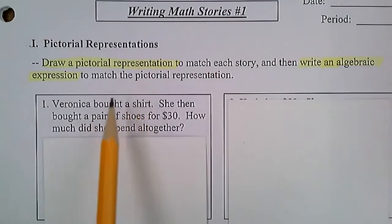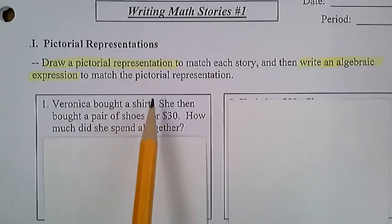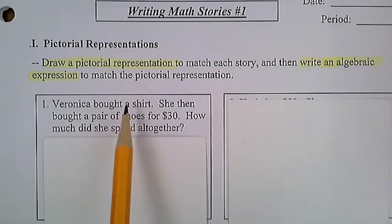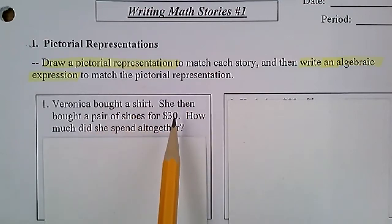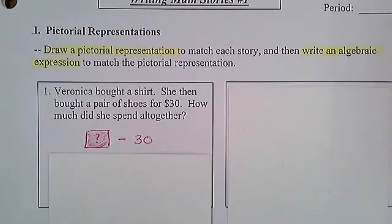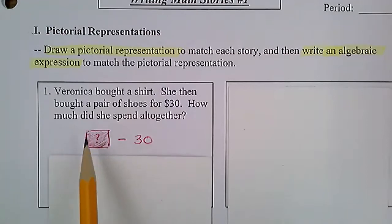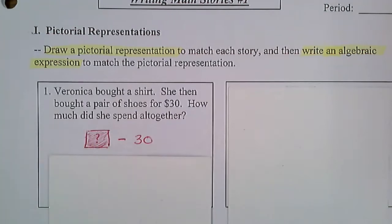We don't know how much the shirt was. The question asks how much she spent altogether — that's an unknown amount. The shirt wasn't $30; the pair of shoes was $30. We don't know how much the shirt was, so we're going to use a tile. I colored it red because it's negative — it's negative money, money being taken out of her bank account. That's how we represent in tiles that something is negative.